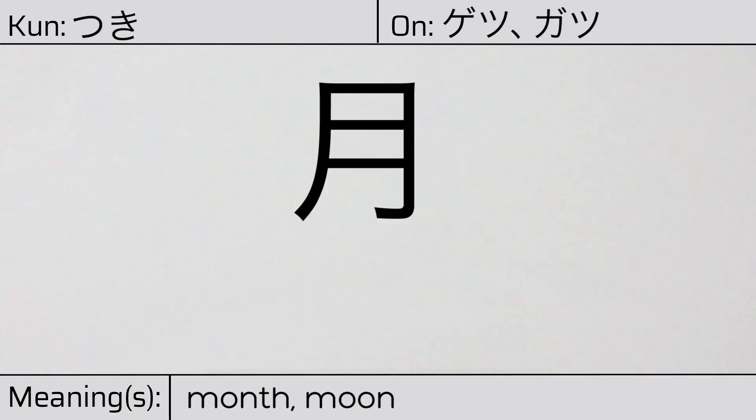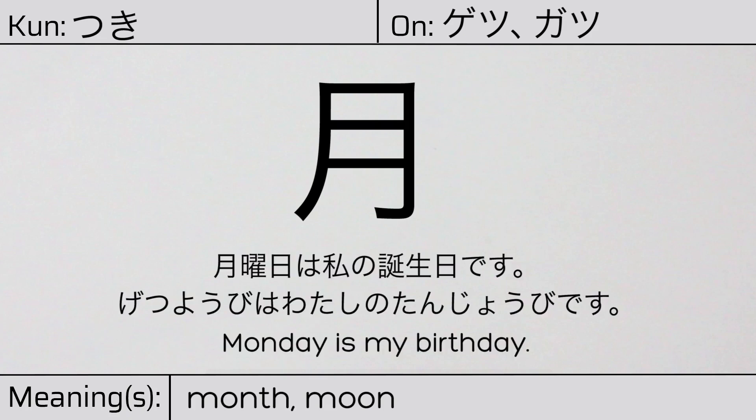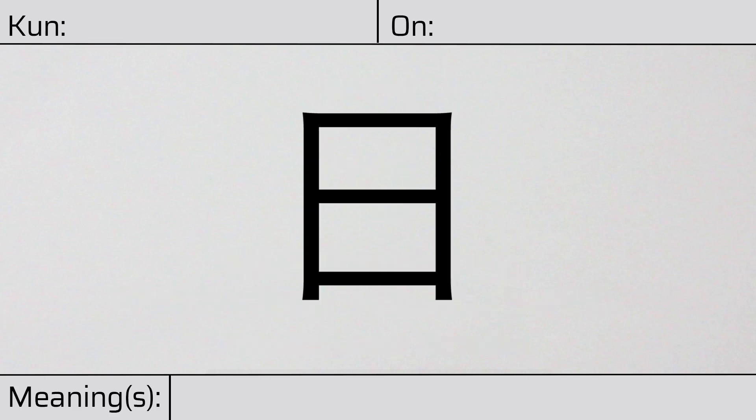You can remember this kanji by thinking of it as the moon being partially covered by two clouds. Our example sentence is: 月曜日は私の誕生日です — Monday is my birthday.